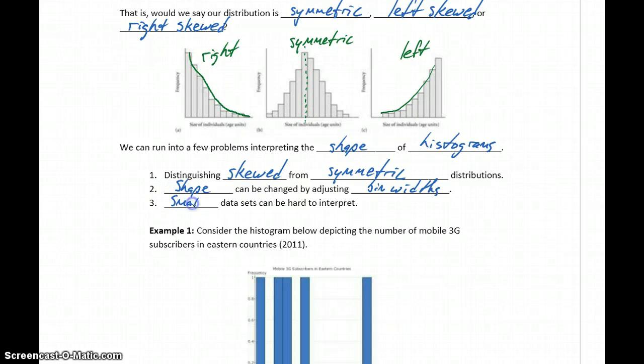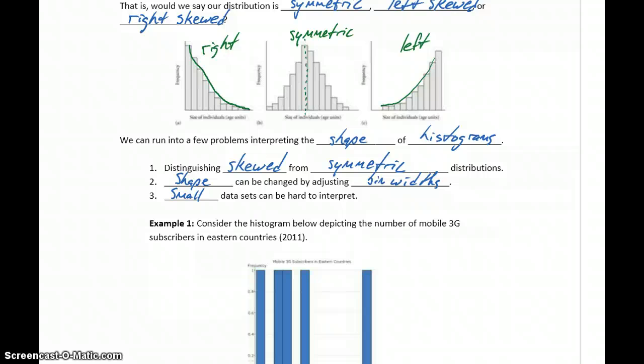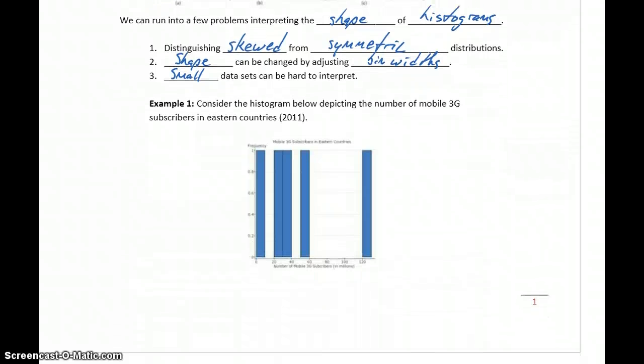And another problem is that small datasets can be hard to interpret, especially if we're looking at histograms. If we consider this example below, this is a histogram depicting the number of mobile 3G subscribers in eastern countries from some data that was reported in 2011.